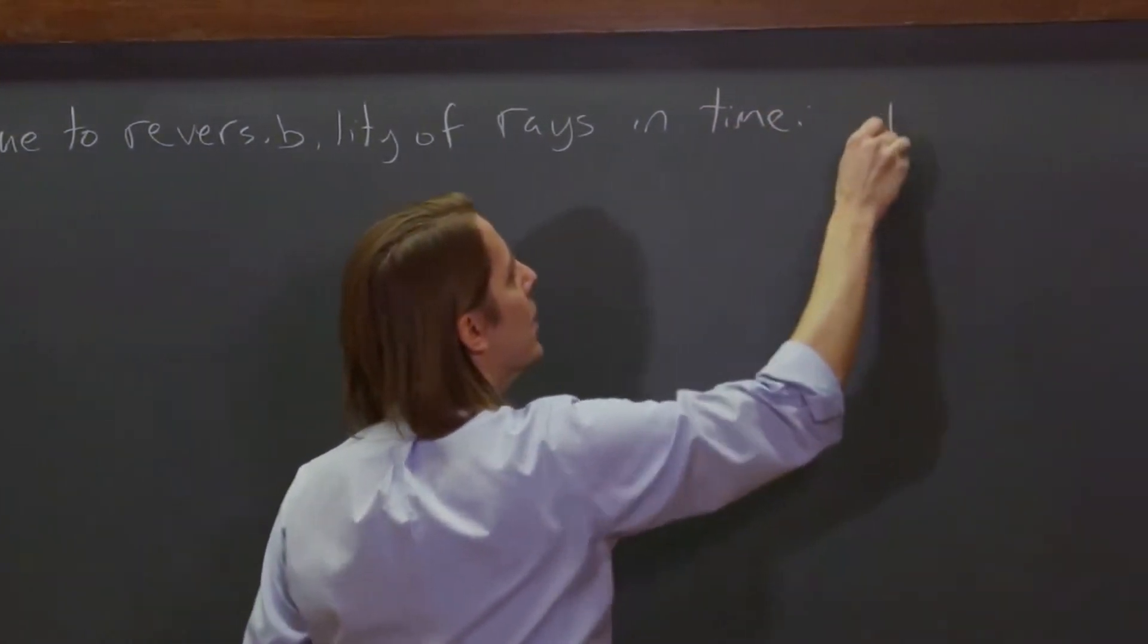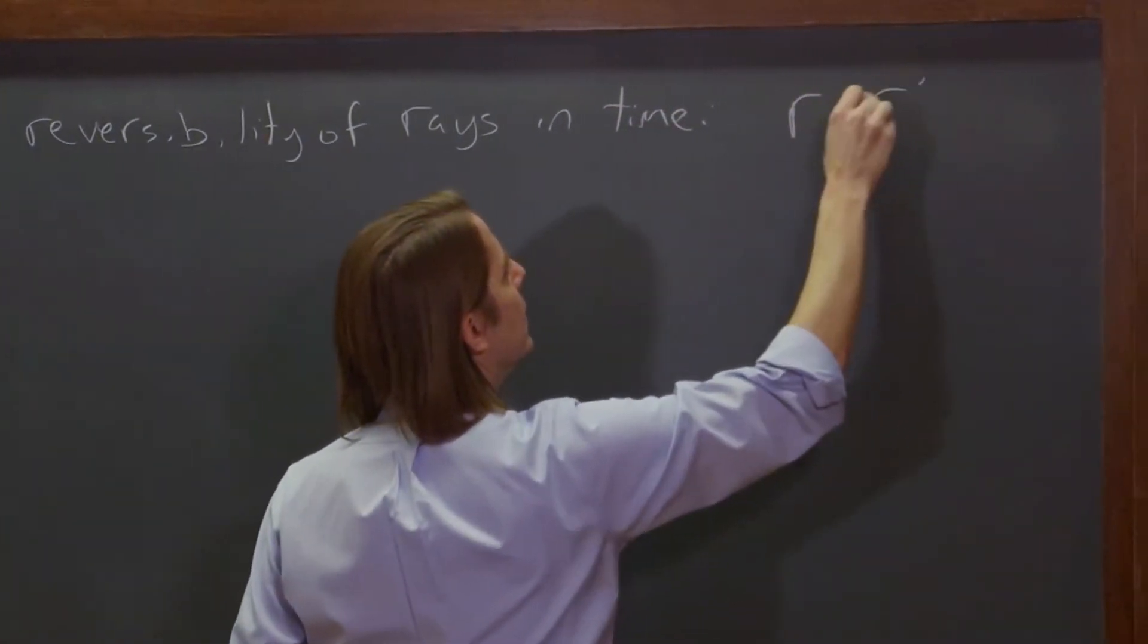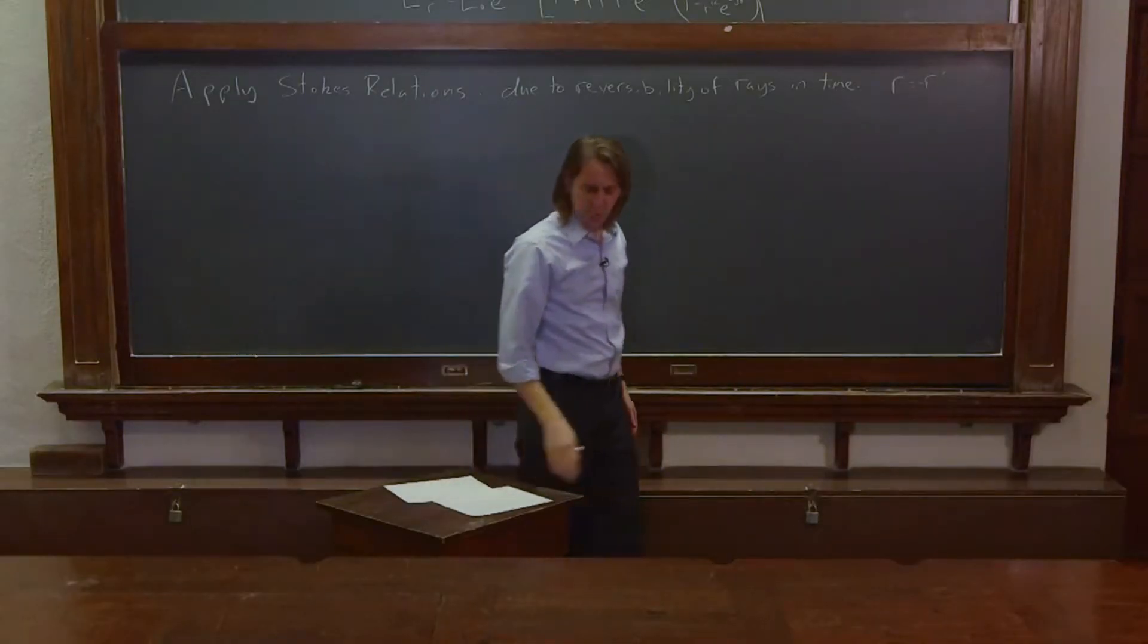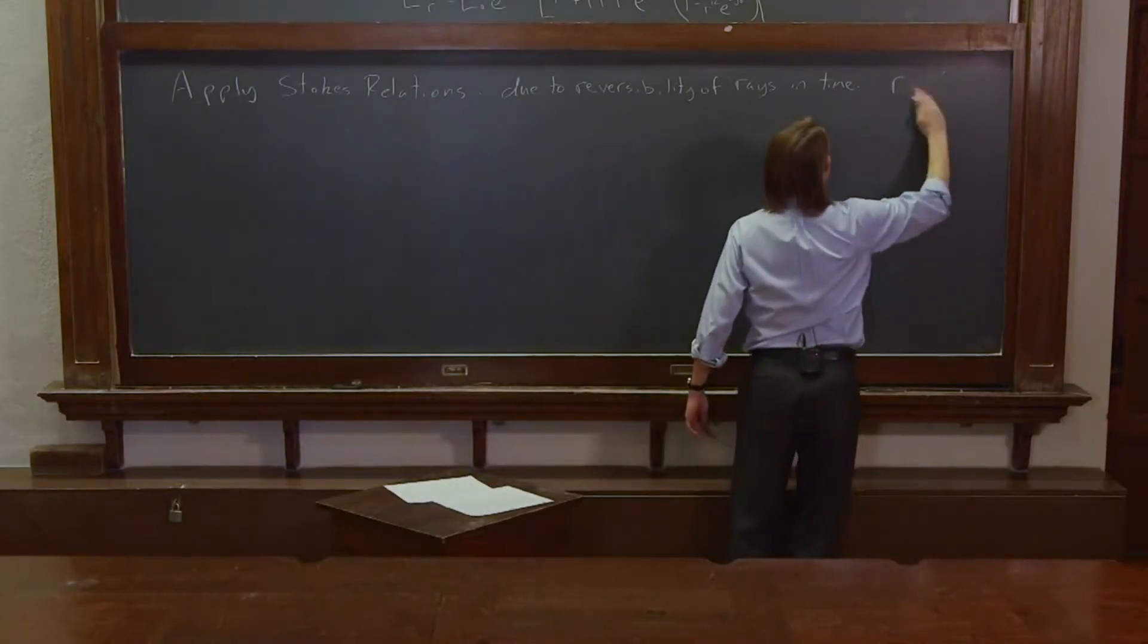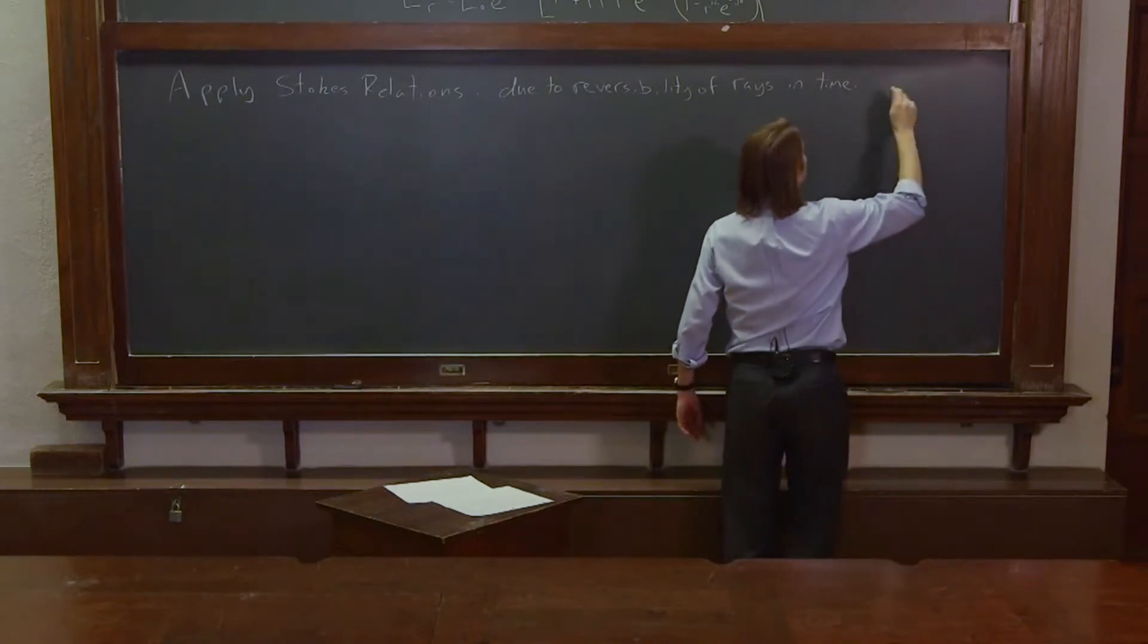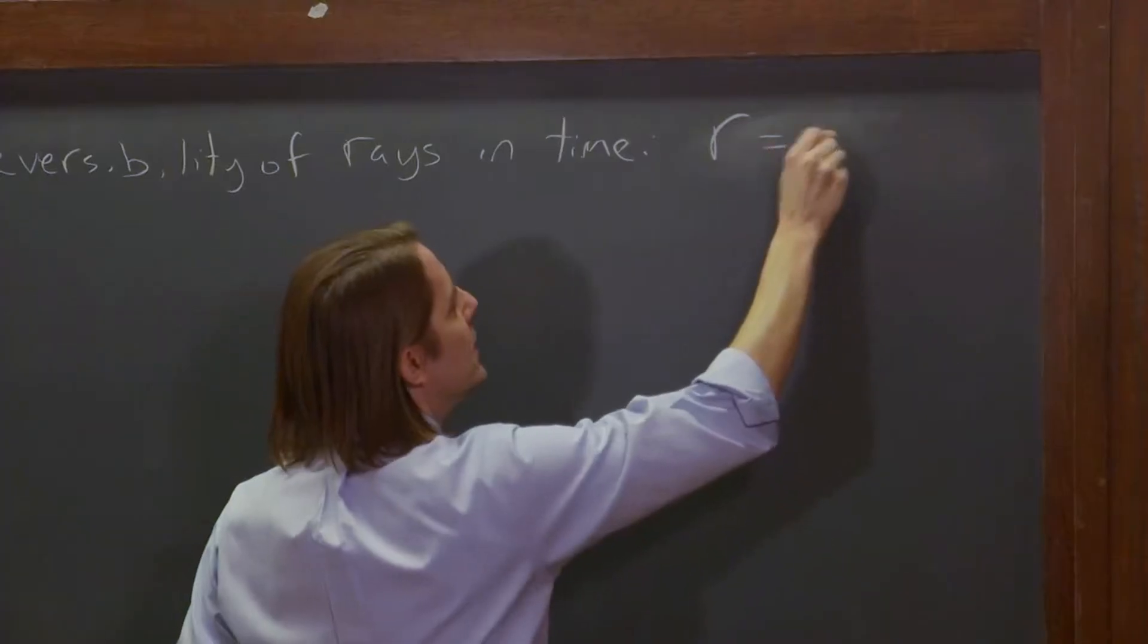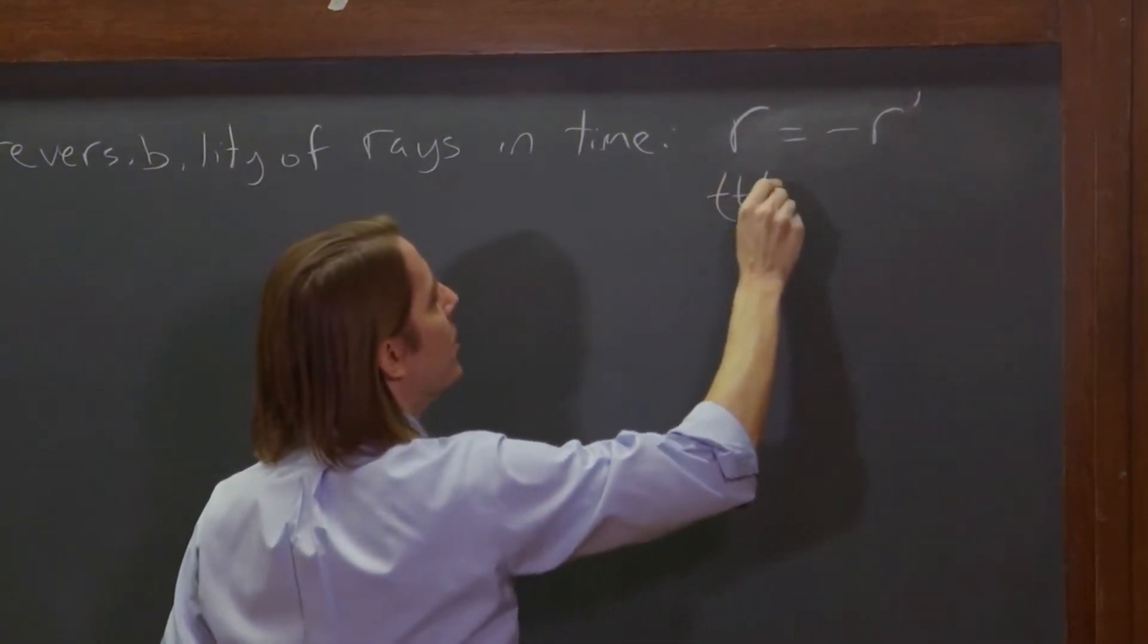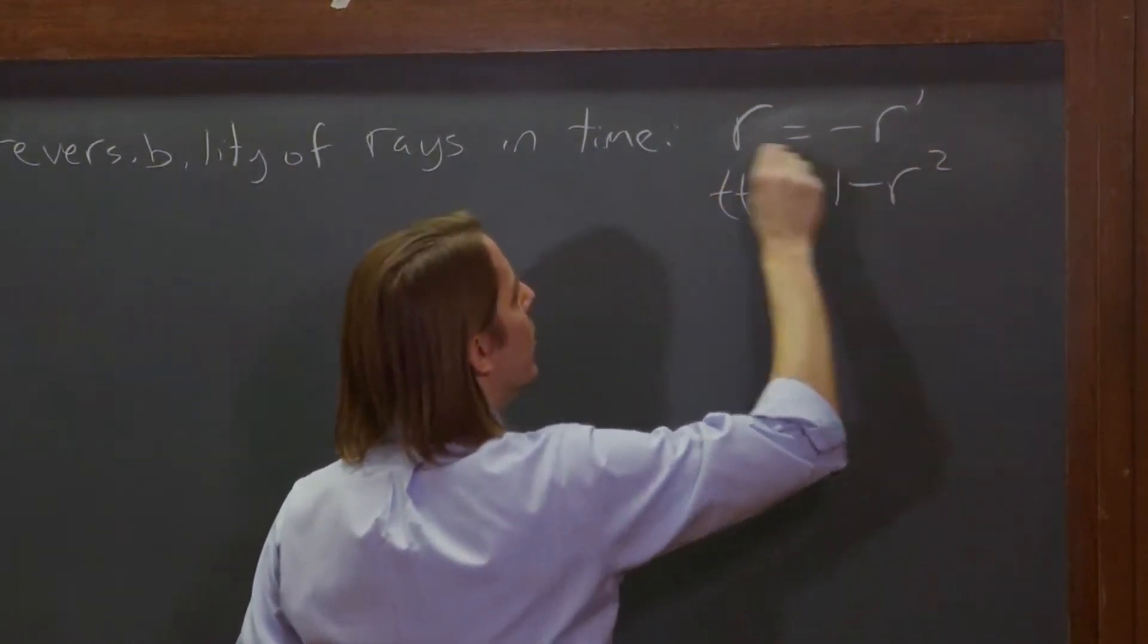r equals negative r prime and tt prime is 1 minus r squared. Write that a little bigger. r equals minus r prime and tt prime is 1 minus r squared.